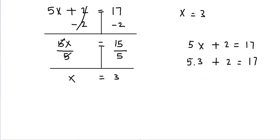Now we simplify this. This is 5 times 3 which is 15 and then we have 15 plus 2 is equal to 17. Well, 15 plus 2 is 17 and 17 is indeed equal to 17. Since this makes my equation true, I know that my answer is correct. So x is equal to 3.